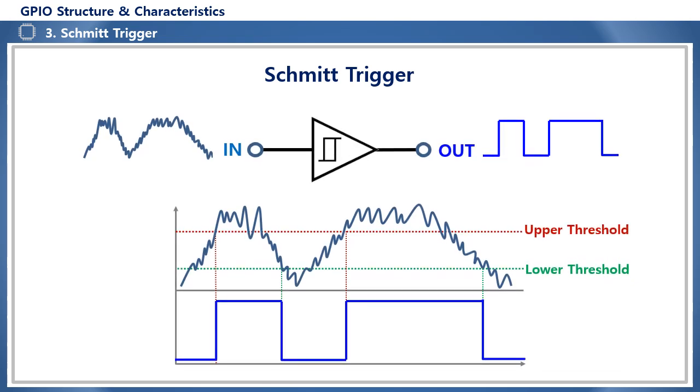Schmitt triggers are applied to the digital input side of the GPIO circuit inside the IC or MCU. The signal becomes a noisy signal as it passes through the PCB or cable, and in digital ICs. This signal noise is removed to obtain a clean digital signal without noise, so the Schmitt trigger is used.